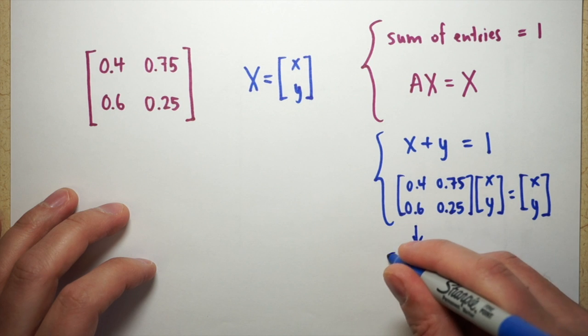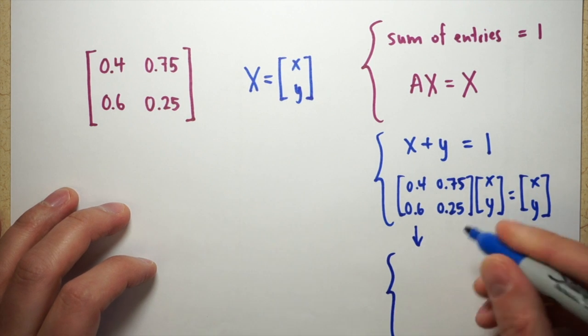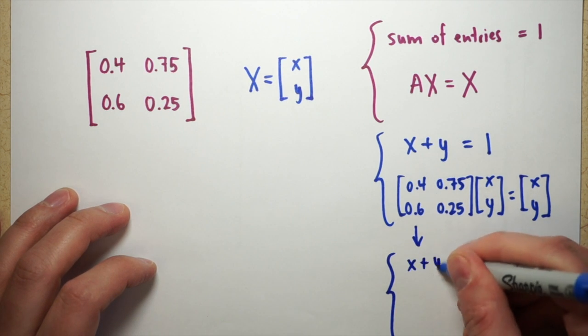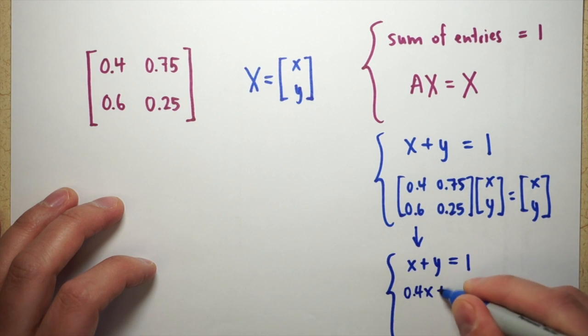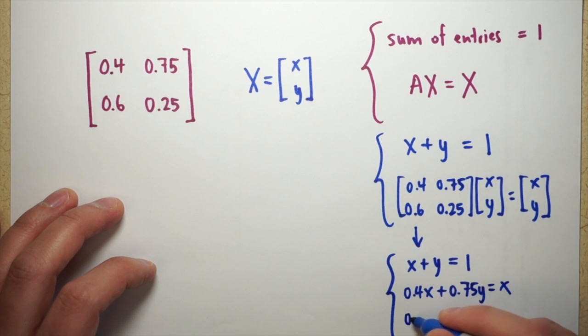If I simplify this a bit, I'll write out the actual equations for the matrix multiplication. My x plus y equals 1 is the same. If I multiply across, it'll be 0.4x plus 0.75y has to equal x, or the top entry in the last matrix, and then 0.6x plus 0.25y will have to equal y.